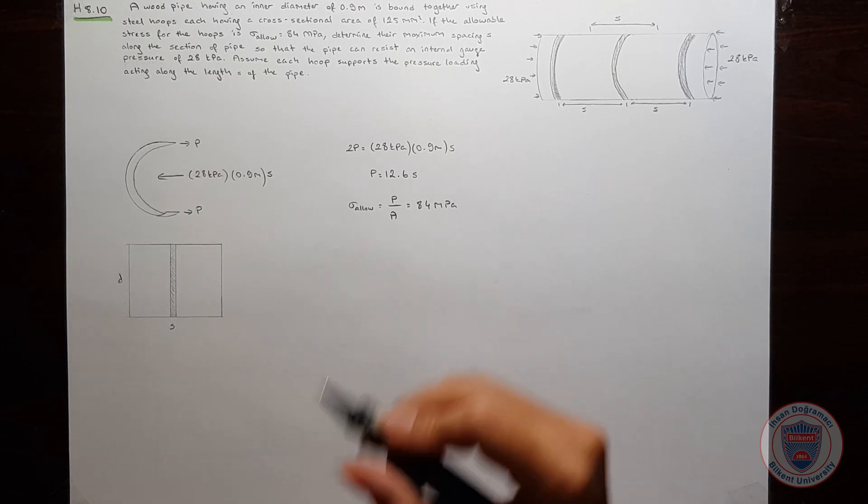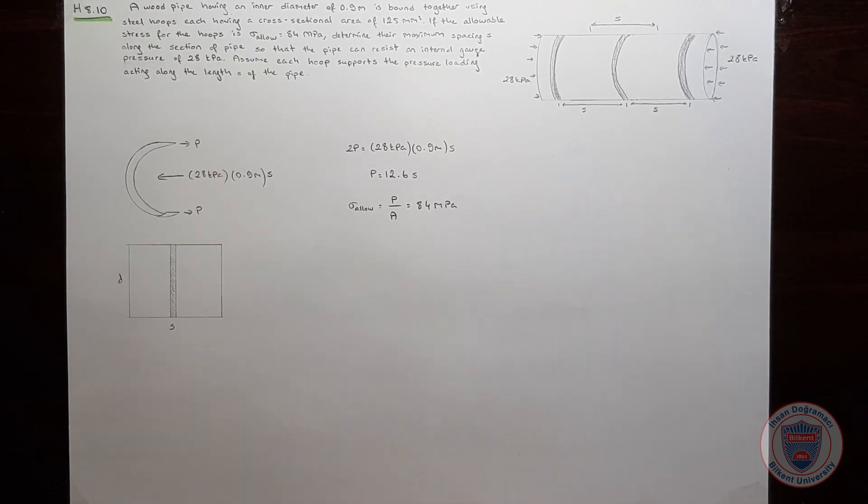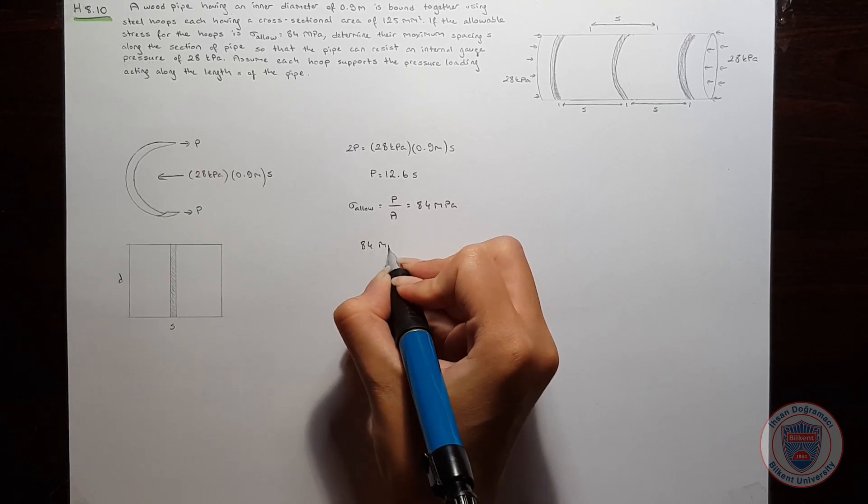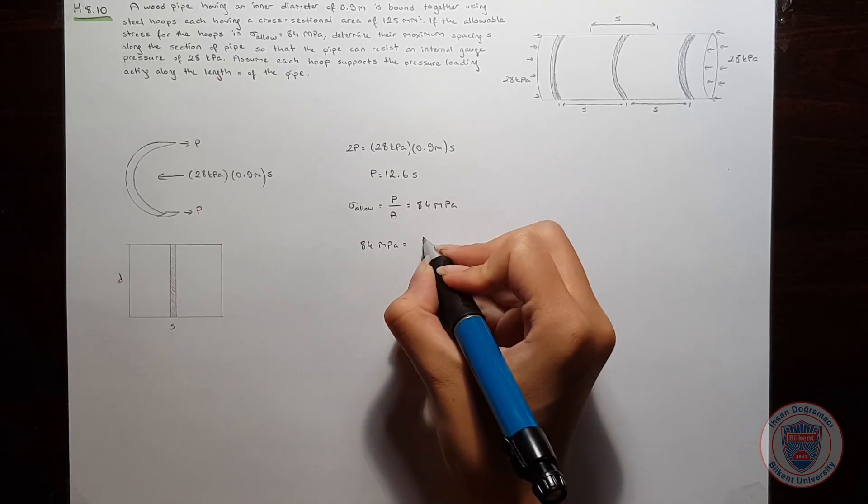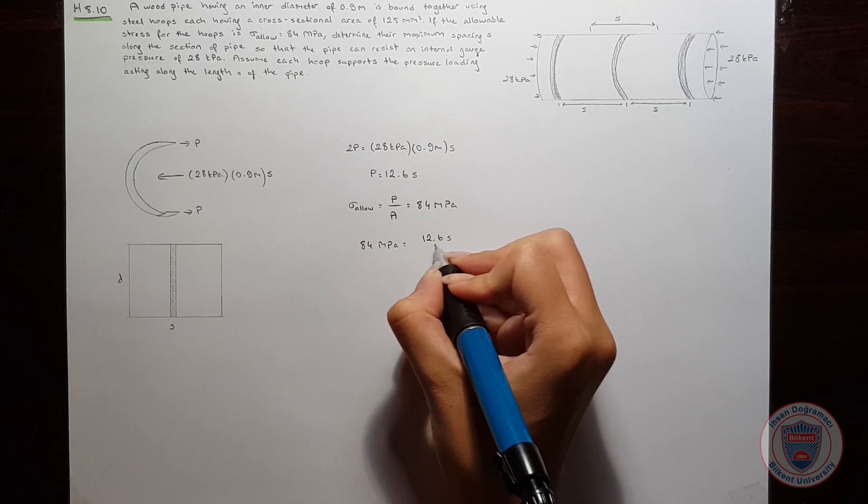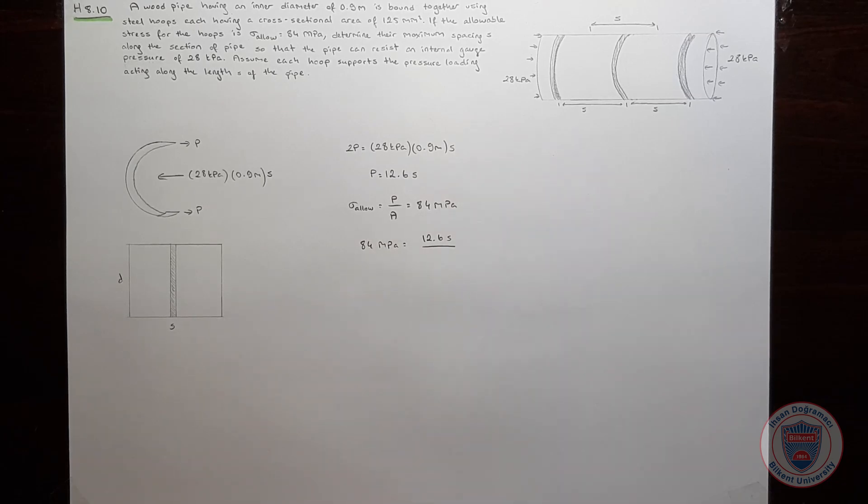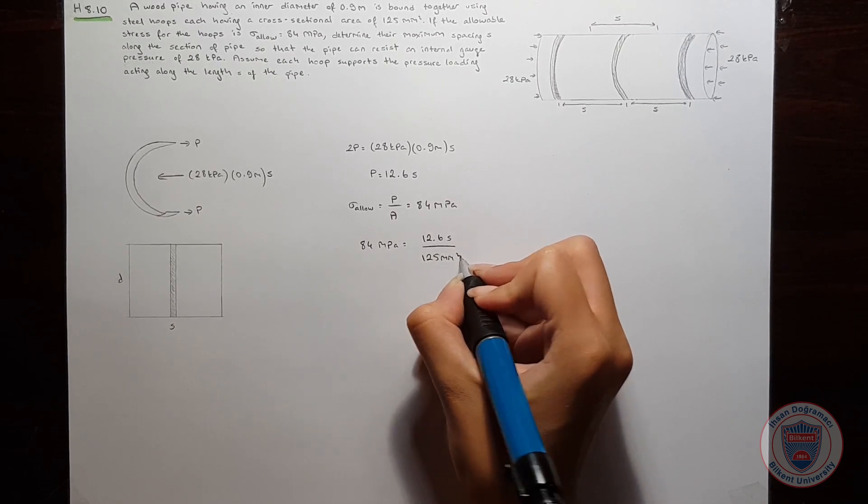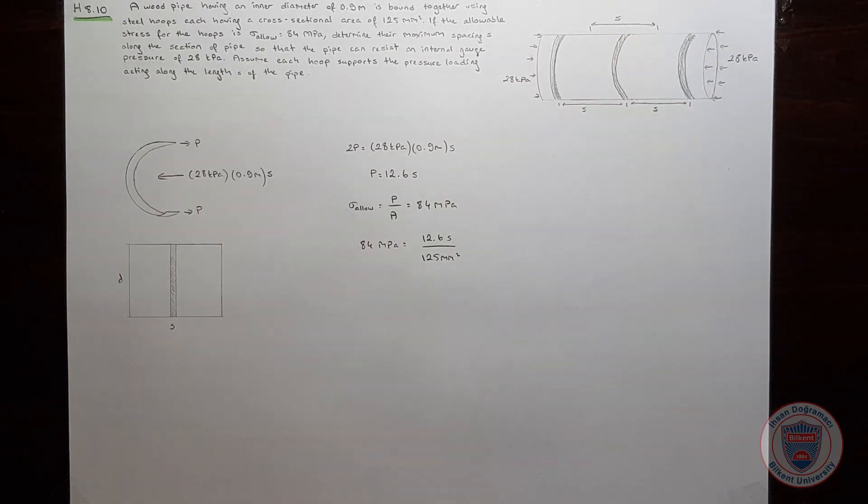We know our force is 12.6S, so let's substitute the values. The area is 125 mm squared, which is given in the question.